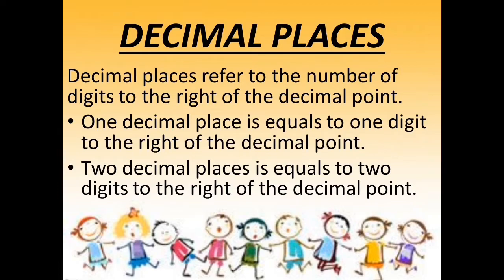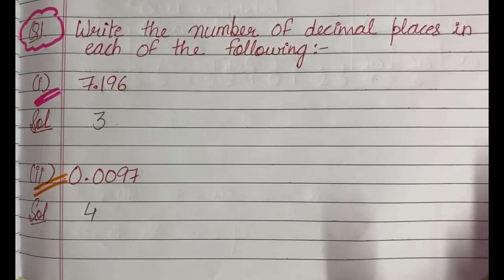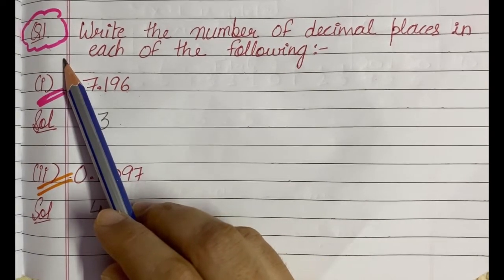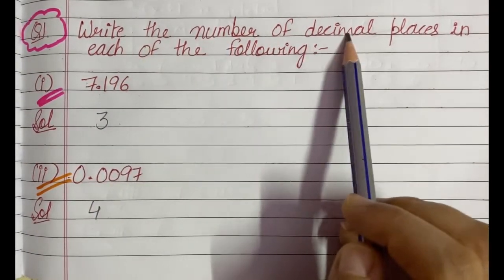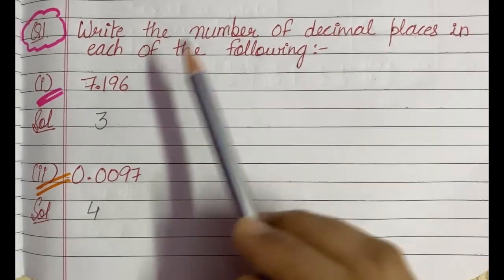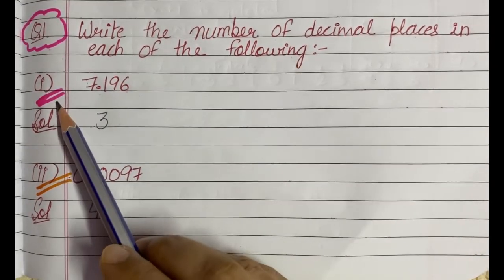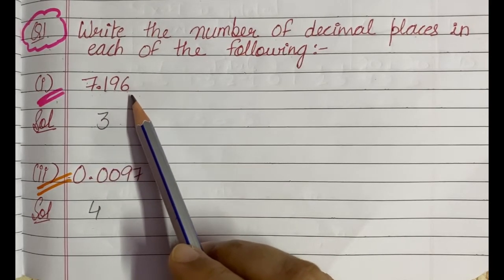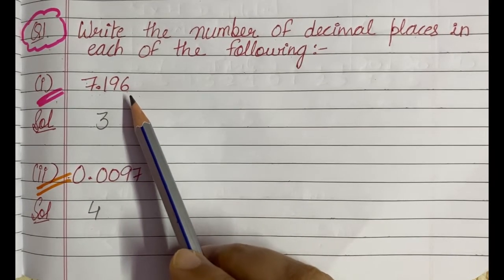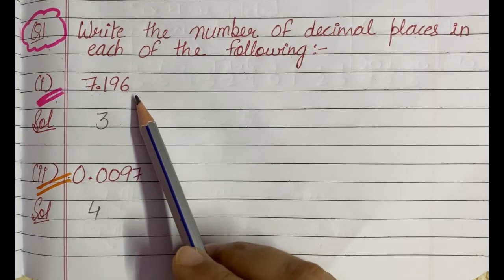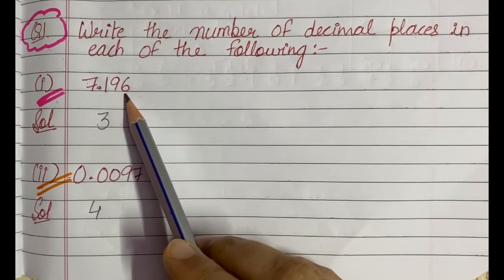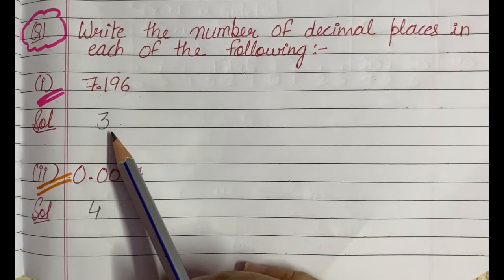Let us see this with the help of an example. Question number 1 says: write the number of decimal places in each of the following. The first part is 7.196. If you see the number of digits in the decimal part — 1, 2, 3 — so 3 will be the answer.